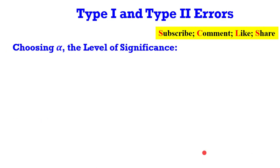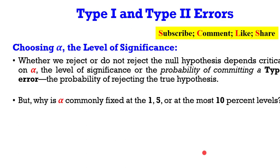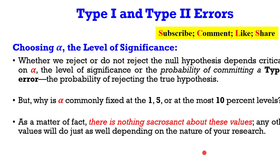Now I'm going to talk about choosing alpha, the level of significance. Whether we reject or do not reject the null hypothesis depends critically on the level by which you have set your alpha, which is the probability of committing a type 1 error — also the probability of rejecting the null hypothesis when it is true. But why is alpha commonly fixed at 1%, 5%, or at most 10%? As a matter of fact, there is nothing sacrosanct about these values; any other values will do just as well, depending on the nature of your research.